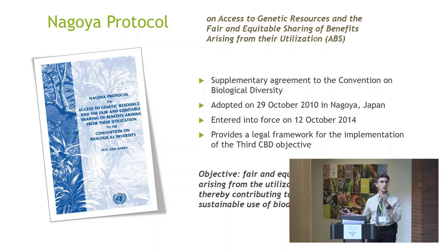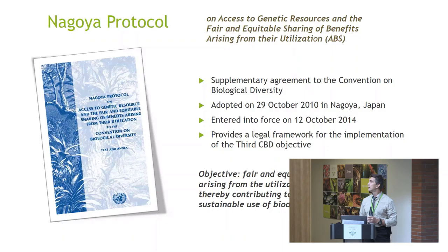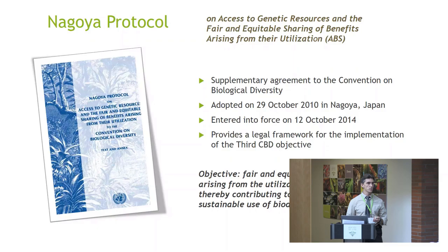The Nagoya Protocol is a legal framework for national legal action. It was adopted in 2010 and entered into force in 2014. It provides the legal framework for implementing the third objective of the convention, which is the fair and equitable sharing of benefits arising from the utilization of genetic resources. The goal is to contribute funds generated in that process towards conservation and sustainable use of biological diversity.